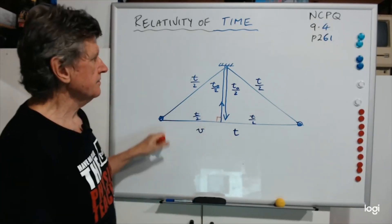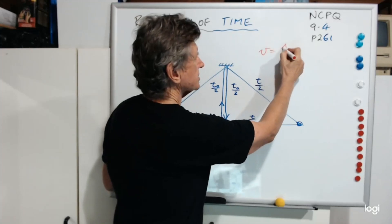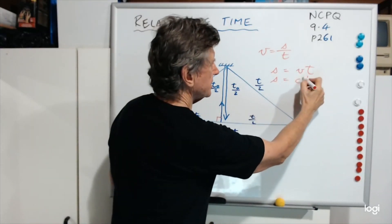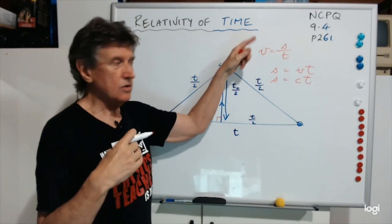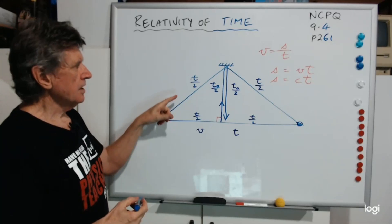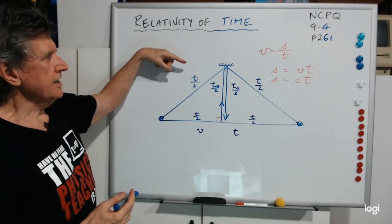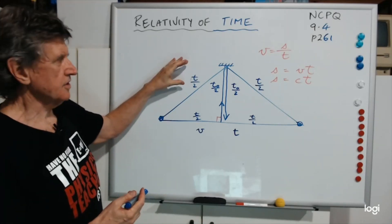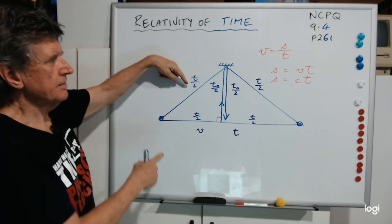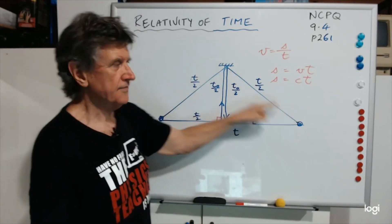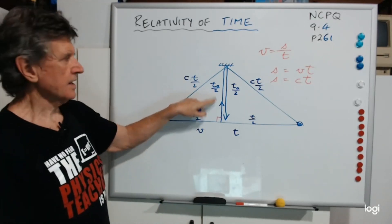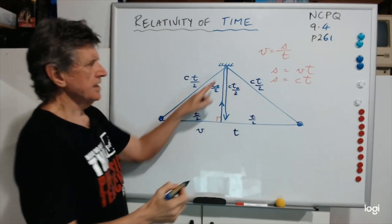We'll treat this as being a right angle. Now you know the formula V = S/T, so the distance S = VT. If we're talking about light, the distance is just CT. The hypotenuse is the distance travelled by light, so that'll be CT/2 and CT/2. The vertical side is also the beam of light, so that's CT0/2 and CT0/2.